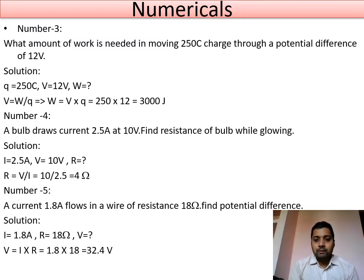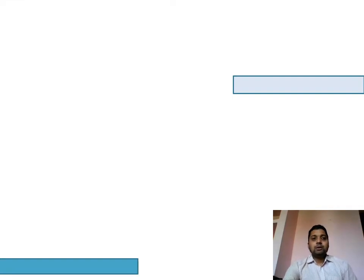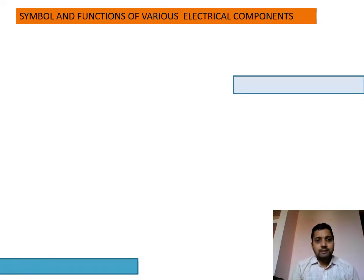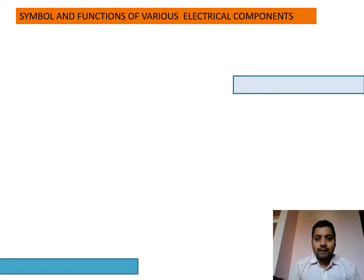Here are some examples of different types of numerical problems you can practice using as a reference. Next, we come to the different appliances used in our domestic circuit. We will look at the symbols and functions of various electrical components. A circuit is a closed path where current is able to flow from the source to the receiver.